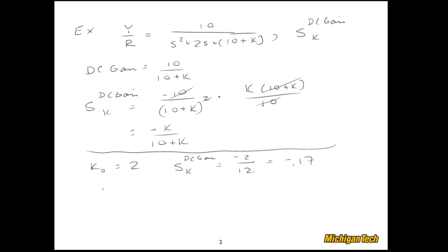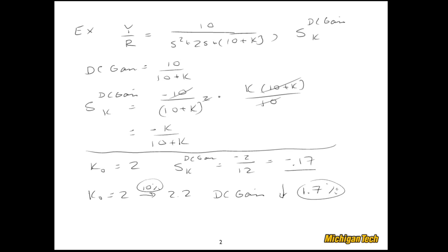What this means is: if we change k by 10 percent — going from k-zero equal to 2 up to 2.2 — then according to this, the DC gain is going to go down by 1.7 percent. In rough terms, if we go up with our gain by 10 percent, we go down with our DC gain by about 2 percent. The sign gives us directional information.